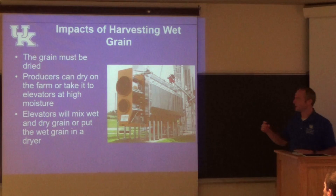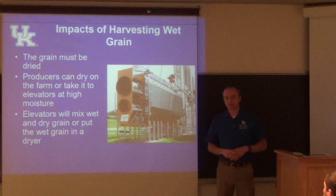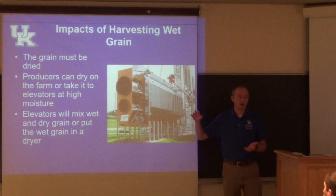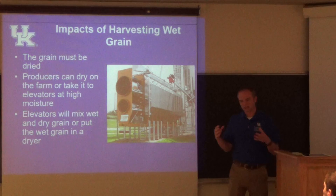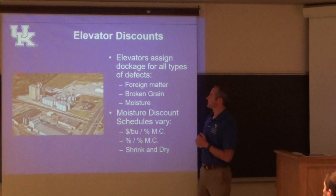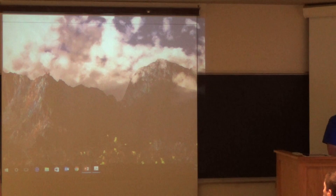It's a huge discount — I think it was like a 10% loss harvesting at 8%. That's another reason why they want to start early. If you start early, you have to dry — either on-farm or at an elevator. Elevators sometimes mix wet and dry grain to average out the moisture, or they just dry it. When you take grain to an elevator, they're going to assign discounts — you might have a foreign matter discount, broken grain, and moisture is the one we're talking about here.